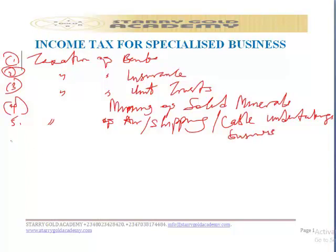In Chapter 5 of this course, we will be looking at the taxation of shipping and airline undertaking businesses. Chapter 6 covers the taxation of agricultural businesses.